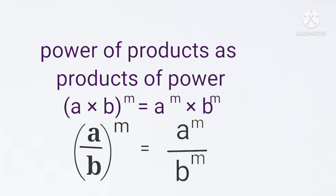Next, the power of a product rule: a product raised to a power equals each factor raised to that power — A to the power N into B to the power N.